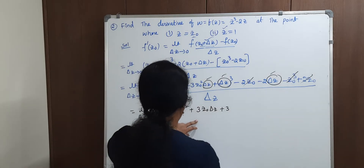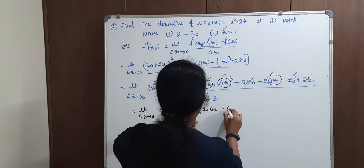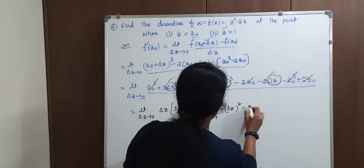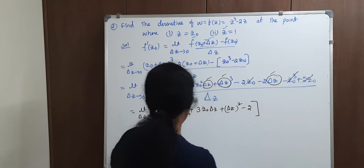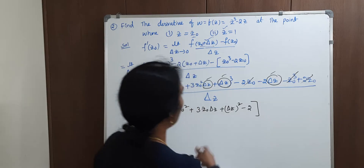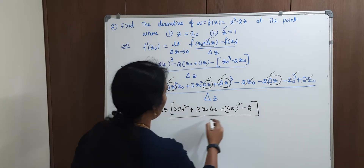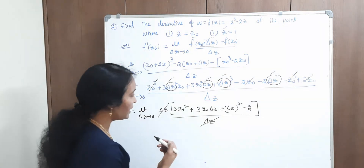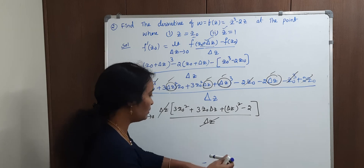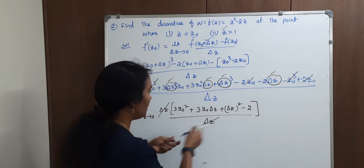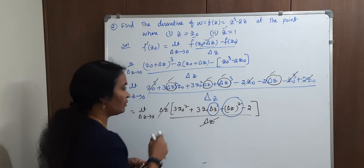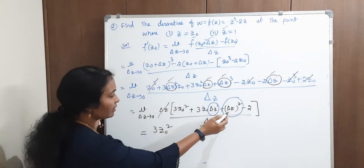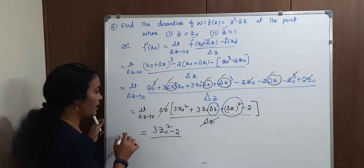Now apply delta z tends to 0. The terms 3 z naught into delta z and delta z squared both go to 0. So the remaining term is 3 z naught squared minus 2. This is the answer for f dash of z naught. So f dash of z naught equals 3 z naught squared minus 2.